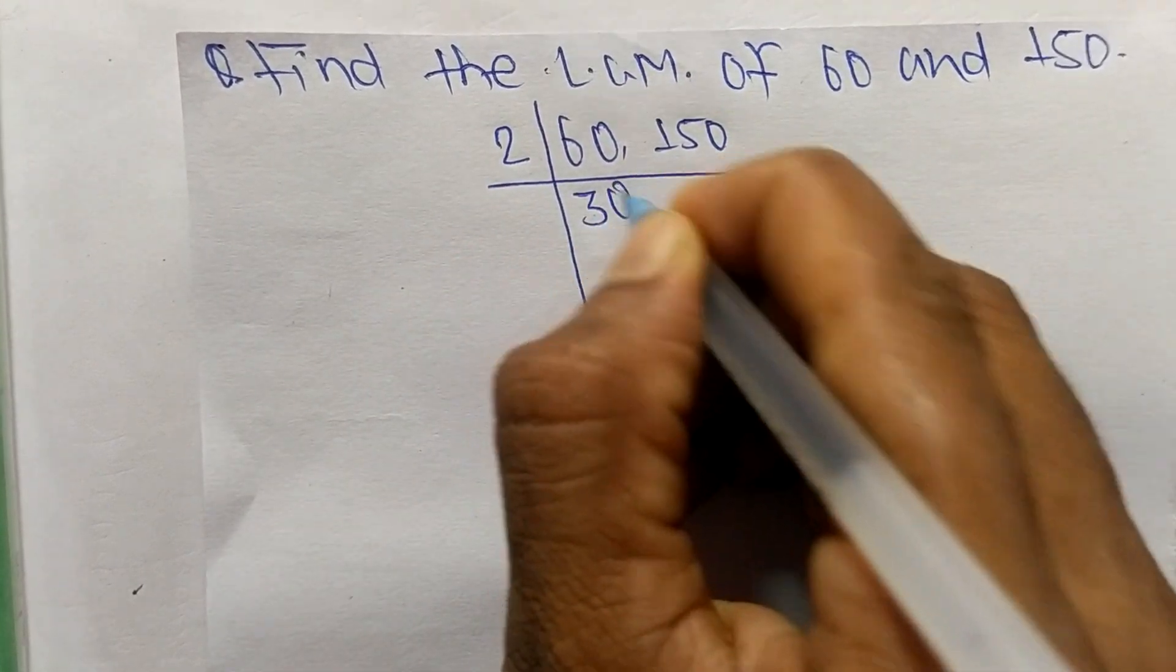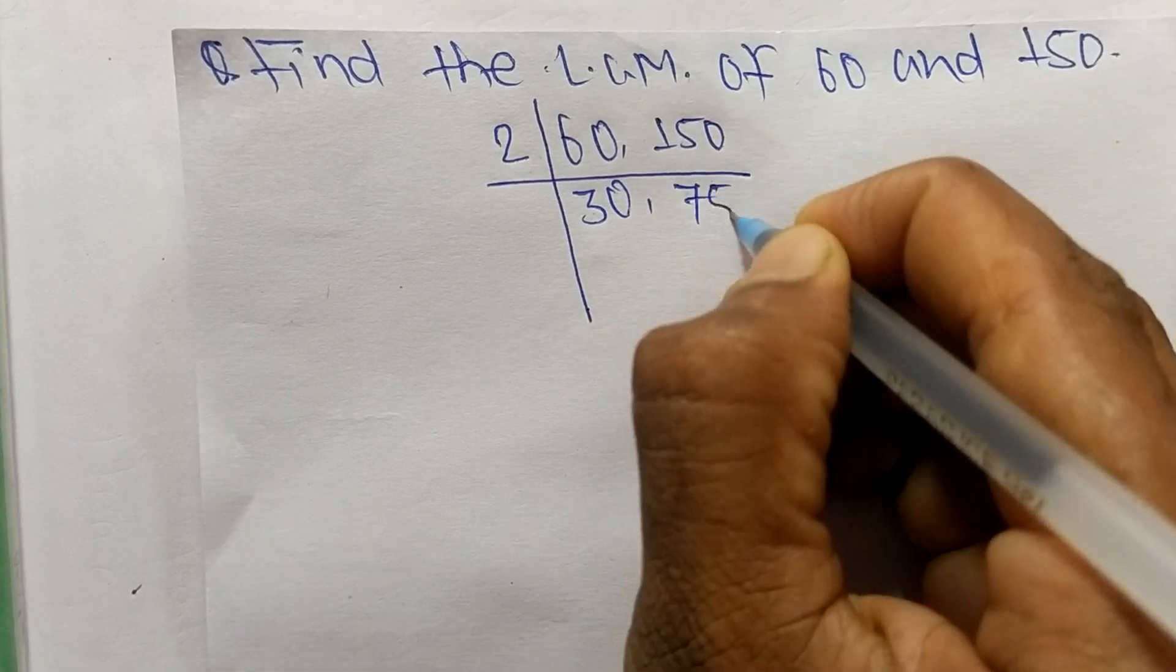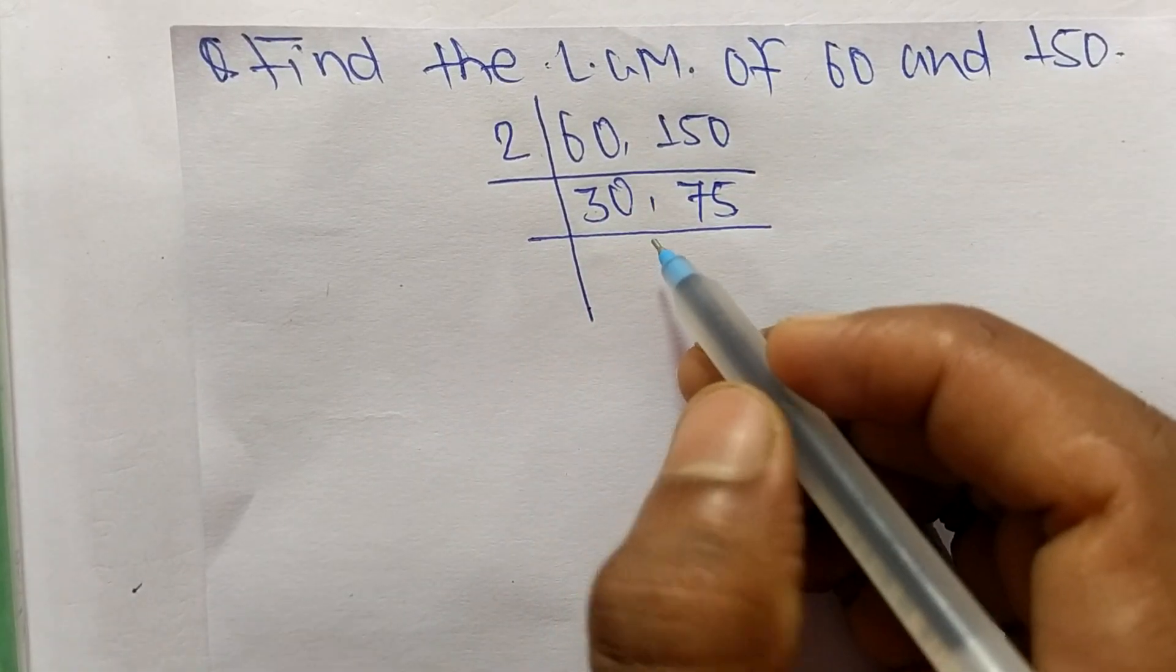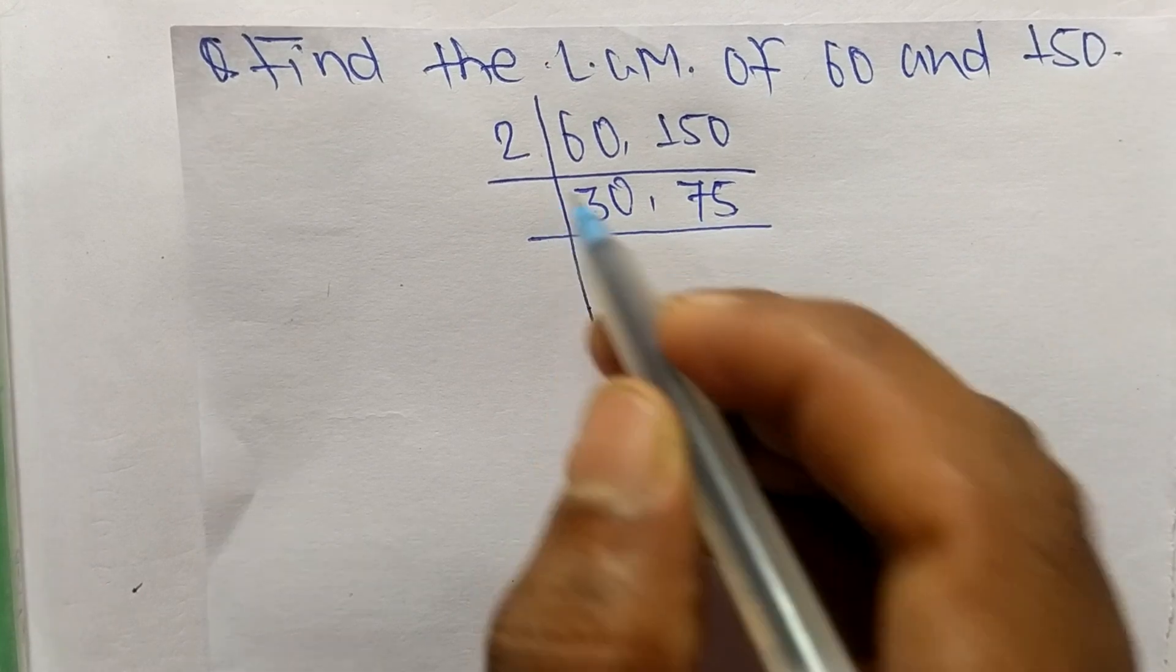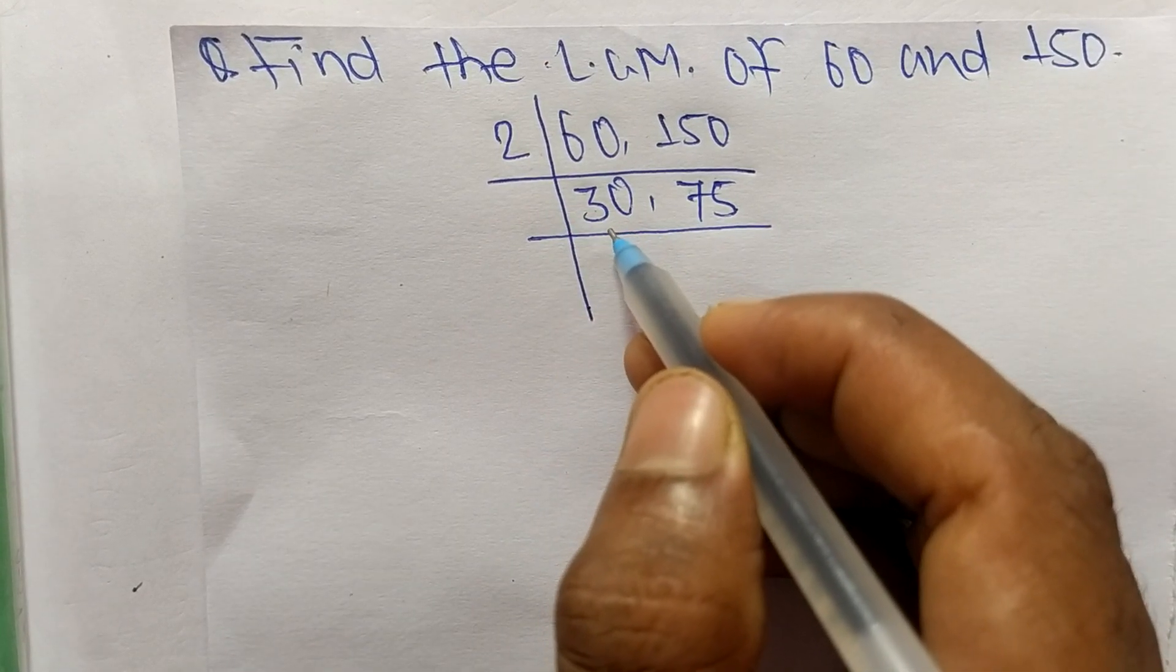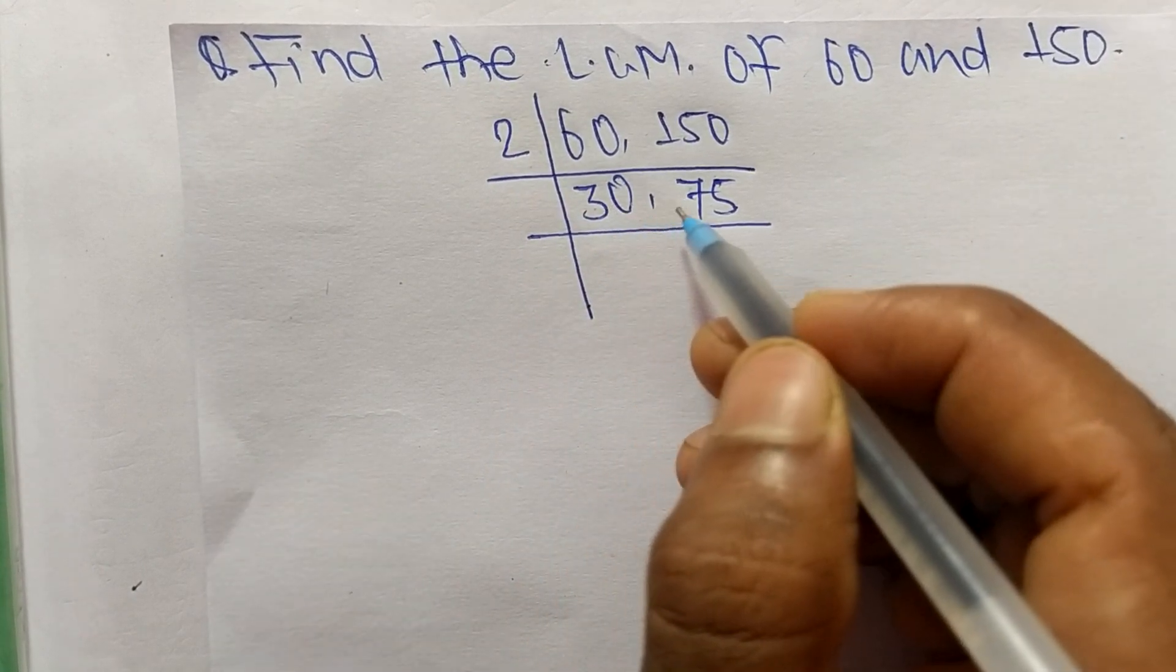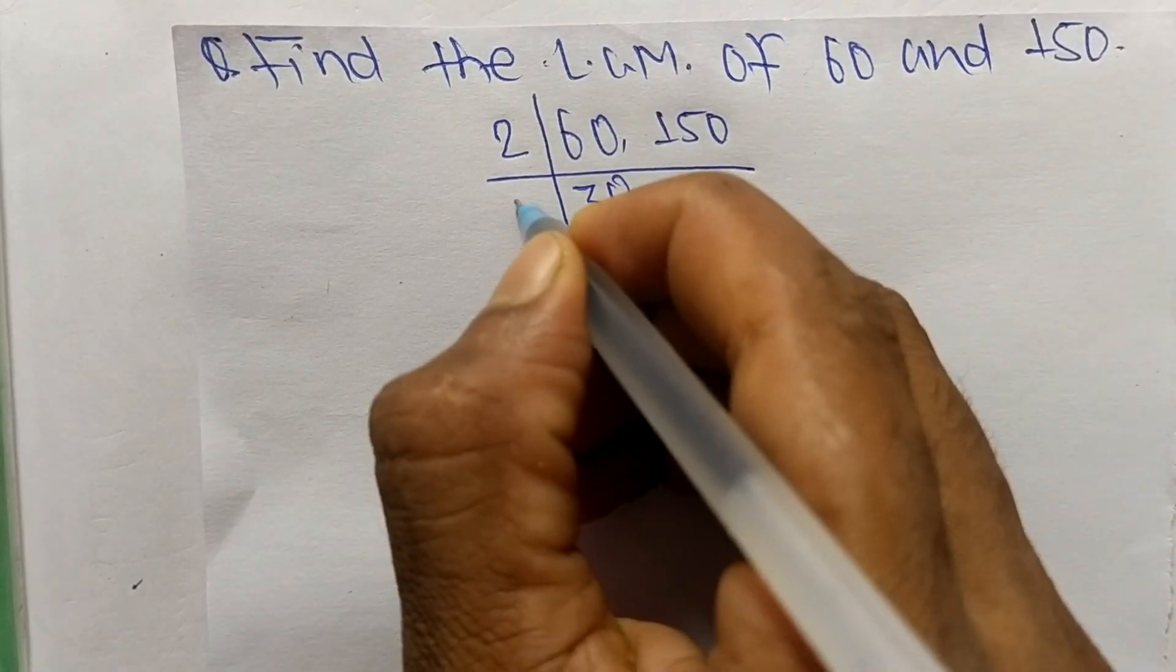Now 2 can't exactly divide 75, it can divide only 30. So we choose the number greater than 2 that can exactly divide 30 and 75. The number is 3, so 3 times 10 equals 30 and 3 times 25 equals 75.